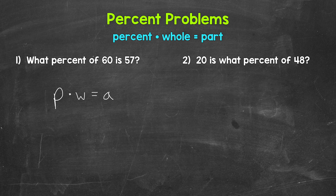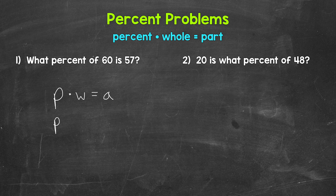The keywords "of" and "is" can be helpful. "Of" can be associated with the whole, and "is" can be associated with the part. For number one: what percent of 60 is 57? "What percent" means our percent is unknown. "Of 60" means our whole is 60. "Is 57" means 57 is the part. So plugging in: we keep the variable P times the whole, which is 60, equals the part, which is 57.